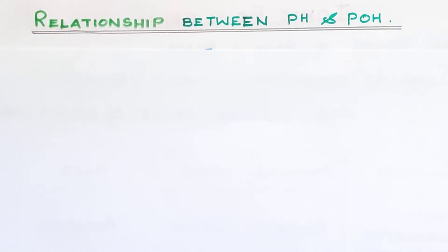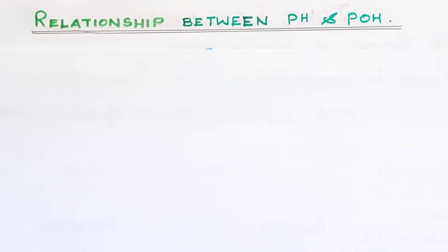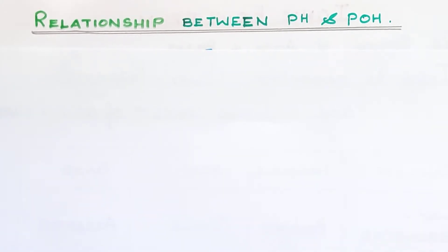Hello my dear students. In the Ionic Equilibrium chapter, we are going to derive an expression for the relationship between pH and pOH. From a board examination point of view, this derivation is very important and at the same time, this derivation is very easy.